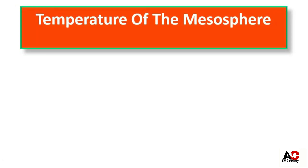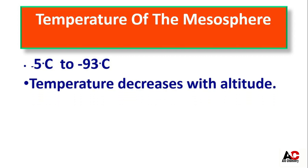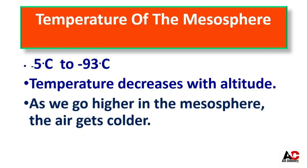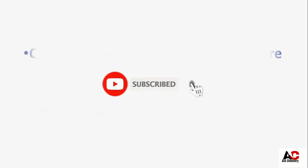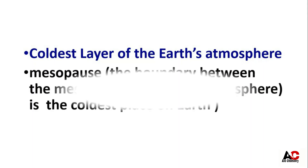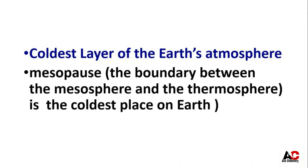The temperature of the mesosphere ranges from minus 5 degrees Celsius to minus 93 degrees Celsius. Temperature decreases with altitude, meaning as we go higher in the mesosphere the air gets colder. That is why this layer is the coldest layer of the earth's atmosphere. We can also say that the mesopause, which is the boundary between the mesosphere and the thermosphere, is the coldest place on earth.